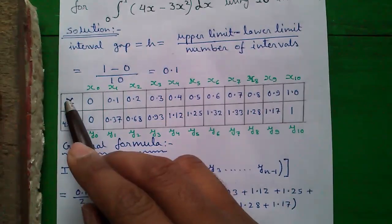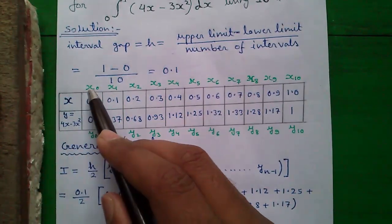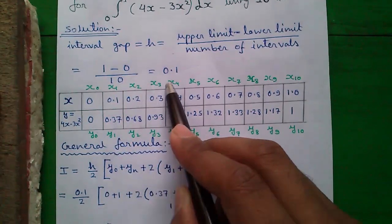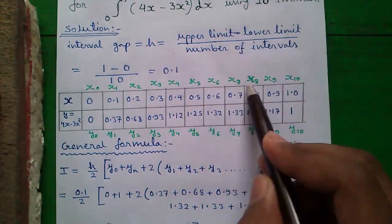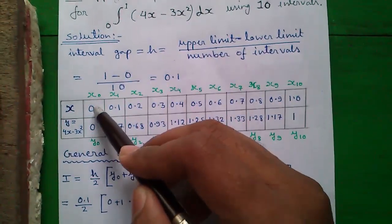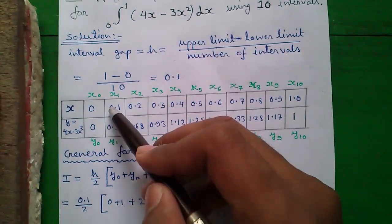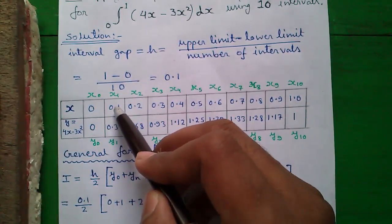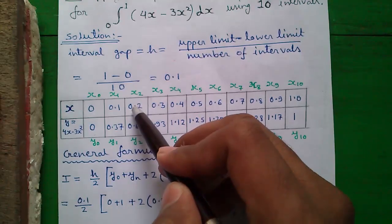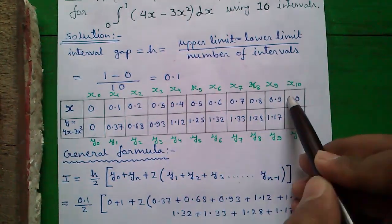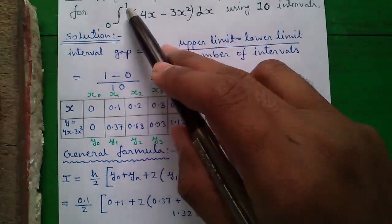Next you have to construct the table. The first row is called x row and the starting value is called x0, next x1, x2 up to xn. In this row write the lower limit that is 0 and then add the value of h with the lower limit. So h is 0.1, so 0 plus 0.1 is 0.1. Next add h becomes 0.2, similarly stop when we will get our upper limit.